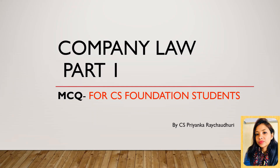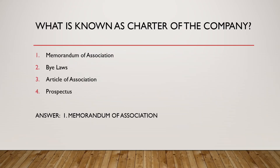First question: What is known as the charter of the company? Four options are given — one: Memorandum of Association, two: Bylaws, three: Articles of Association, four: Prospectus. The answer is Memorandum of Association. The Memorandum and Articles of Association are the incorporation documents of the company. Bylaws are rules and regulations passed by parliament. Prospectus is prepared when a company issues shares or debentures to inform investors. In the Companies Act, the charter of the company means the Memorandum of Association.